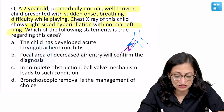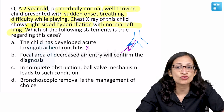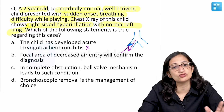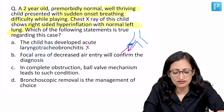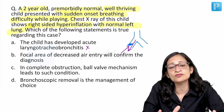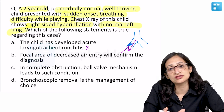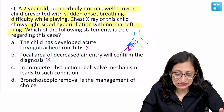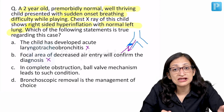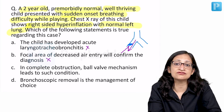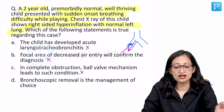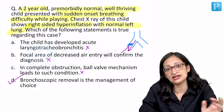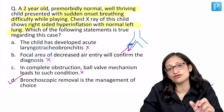Now the options: Acute laryngotracheobronchitis — no, that would have prodromal features, low-grade fever, cough, coryza, and stridor. Focal area of decreased air entry confirms diagnosis — no, collapse can occur for many reasons and doesn't confirm foreign body aspiration. In complete obstruction, ball valve mechanism leads to this — incorrect, complete obstruction produces lung collapse, not hyperinflation. Bronchoscopic removal is the management of choice — yes, the child should be taken to the OT and under sedation/anesthesia the foreign body removed bronchoscopically.